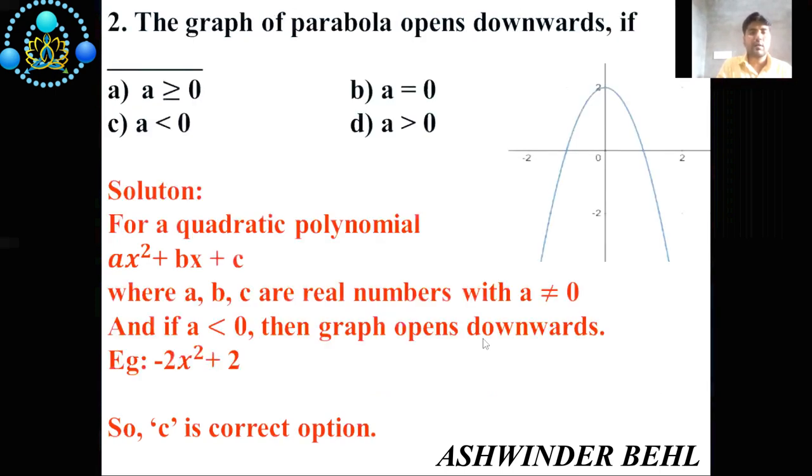Second question: The graph of parabola opens downward if (a) a greater than or equal to zero, (b) a is equal to zero, (c) a less than zero, (d) a greater than zero. Now we'll solve this question. For a quadratic polynomial ax² + bx + c, where a, b, c are real numbers with a not equal to zero.